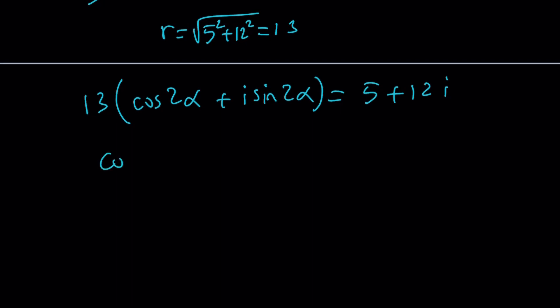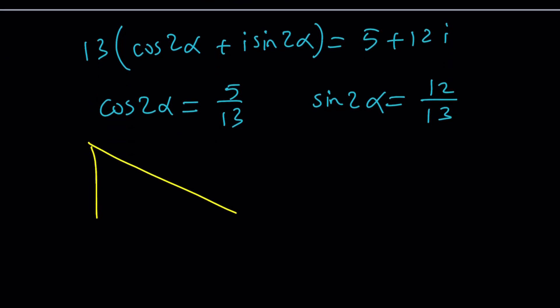If you distribute the 13 and set it equal to 5 and 12, you're going to get the following. Cosine 2 alpha is going to be 5 over 13. And sine of 2 alpha is going to be 12 over 13. Here's what we're going to do. A little trigonometric or geometric trick. We're going to draw a right triangle whose hypotenuse is 13. And since this is going to be 2 alpha, these are going to be alpha and alpha. And from exterior angle theorem, we're going to get 2 alpha.